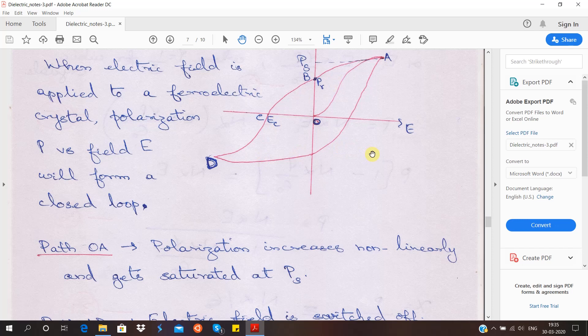So the main properties of ferroelectric materials are spontaneous polarization, high value of dielectric constant, temperature dependency which is given by the Curie-Weiss law, and the hysteresis characteristics.